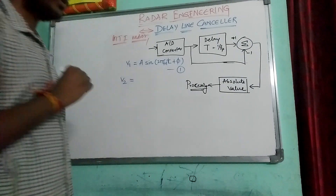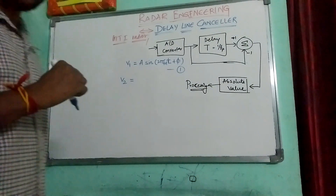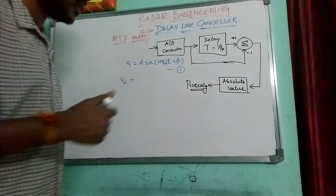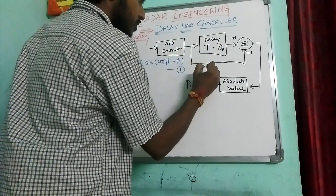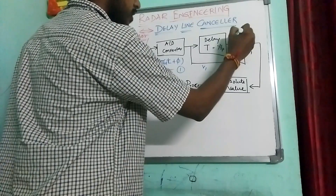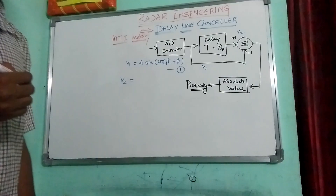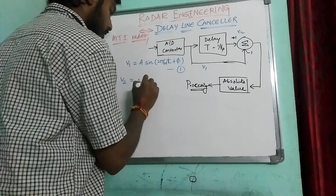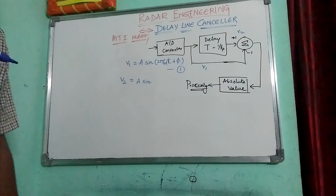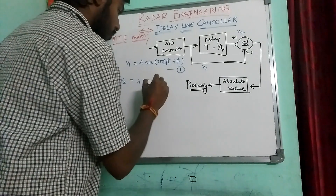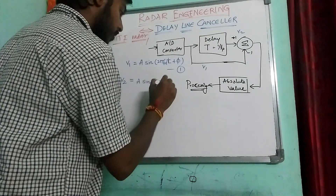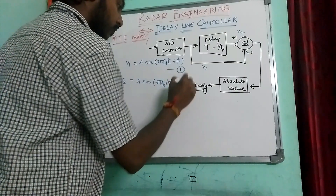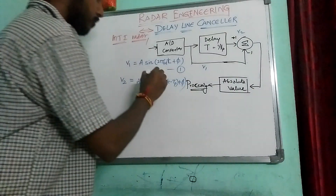Next, V2 is another signal — that means the same signal which is delayed by T_p time units. Now if you see here, this is V1, and whatever we are getting here is V2. V2 will be A sine of 2 pi f_d times (t minus T_p), plus phi — it is delayed by T_p time units.